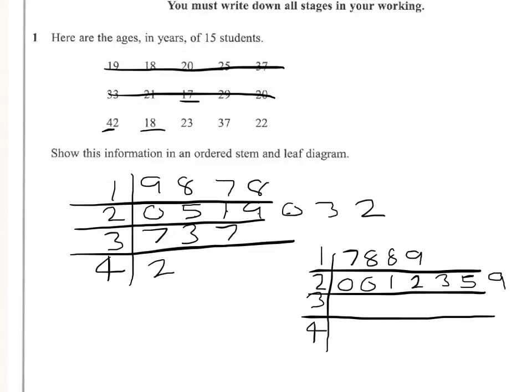The rest is fairly easy, so 3, 7, 7 and 2. It requires us to give a key. So we'll give the key and we'll just say that 1 stroke 7 equals 17. And that will give you all the marks.